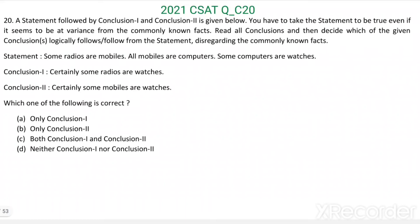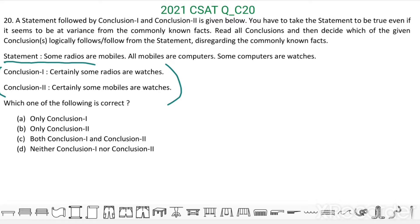Question number 20: we have a statement followed by two conclusions. Statement: some radios are mobiles, all mobiles are computers, some computers are watches. Conclusion one: certainly some radios are watches. Conclusion two: certainly some mobiles are watches.